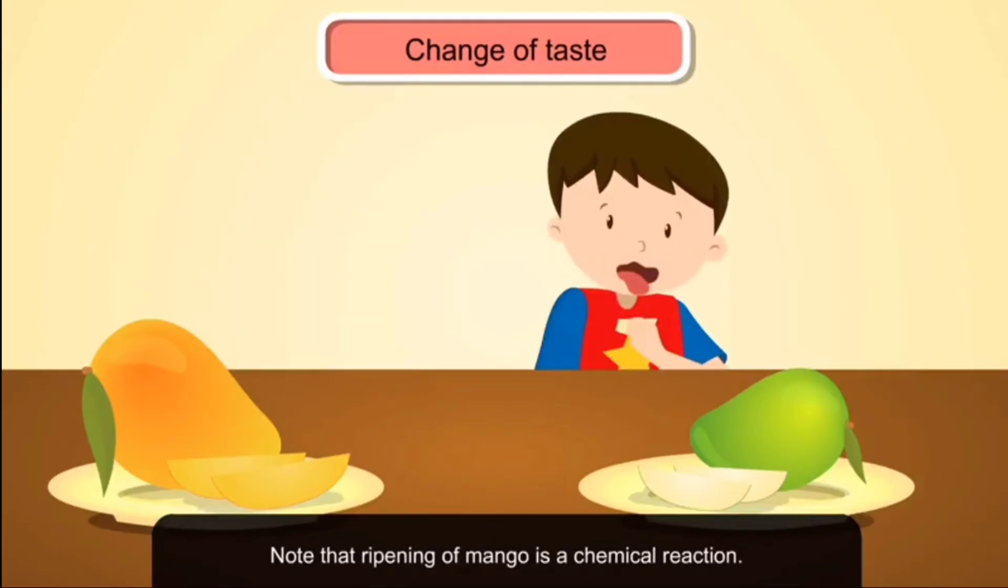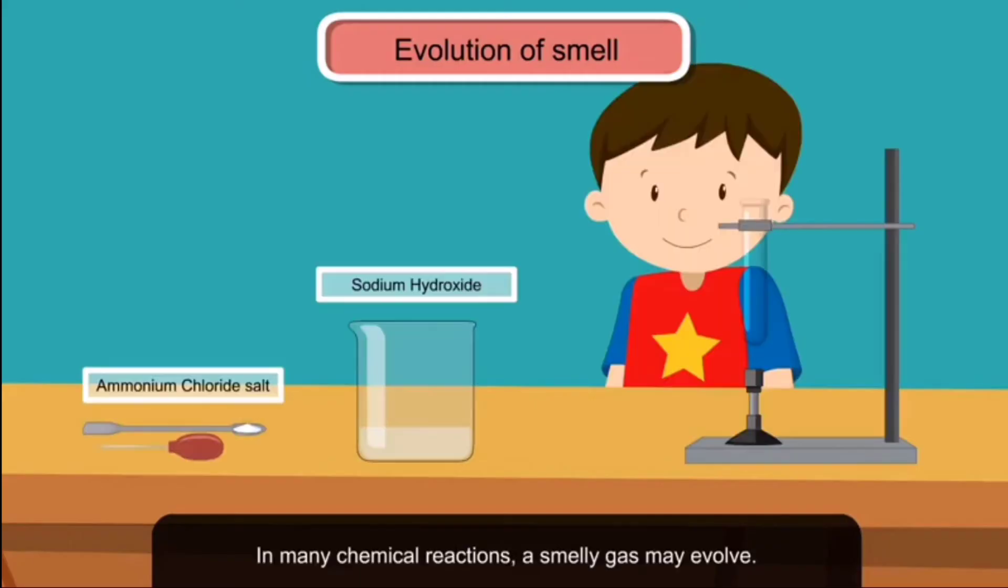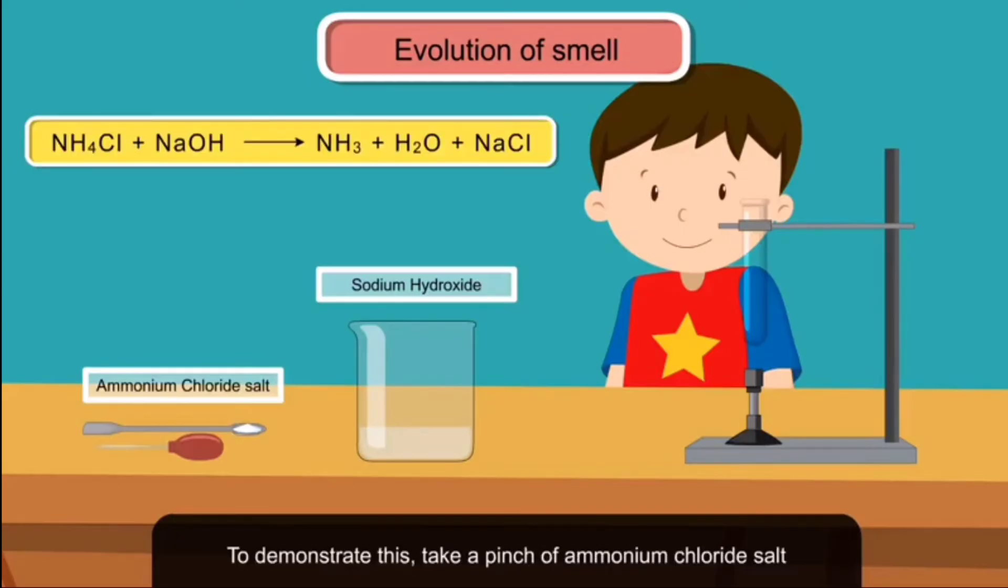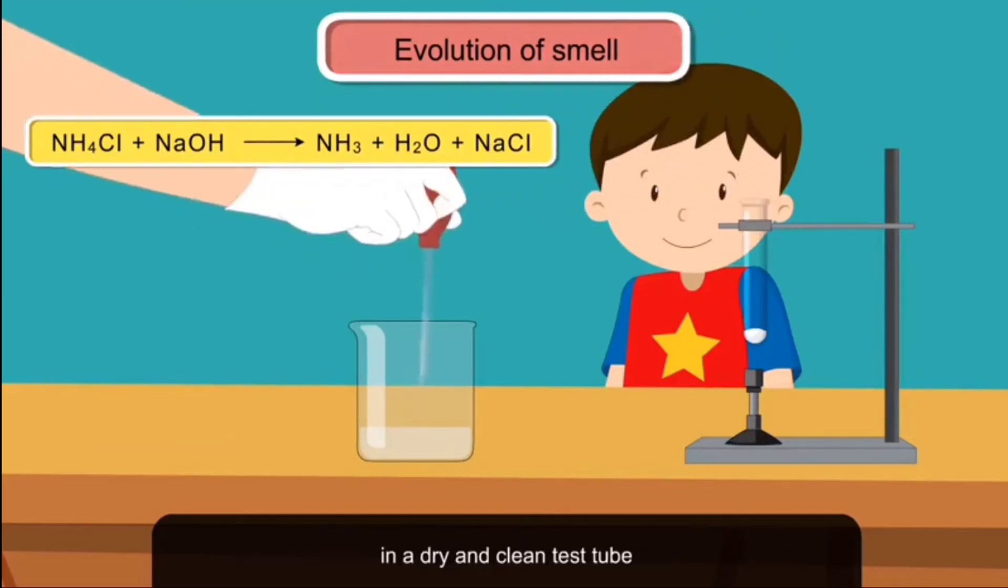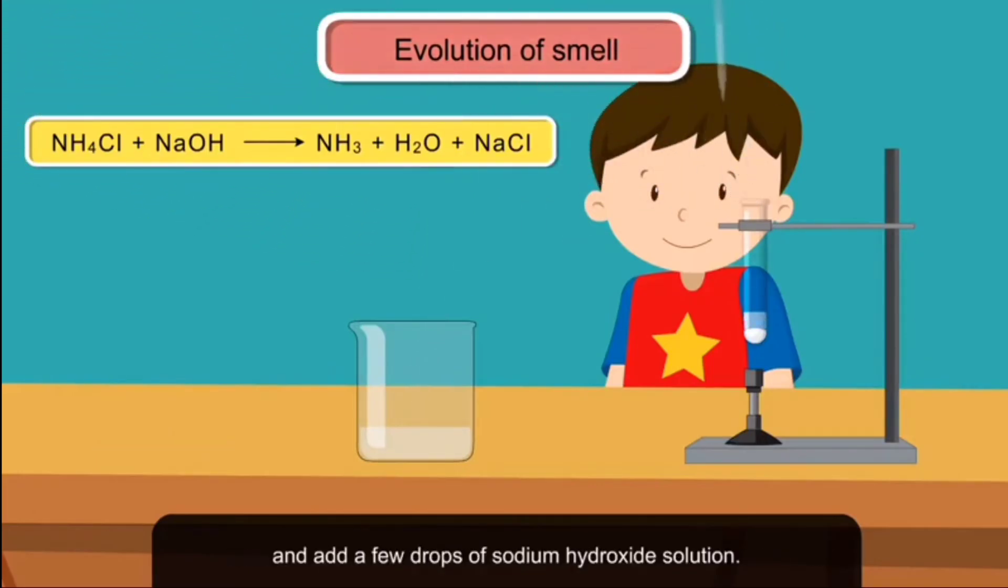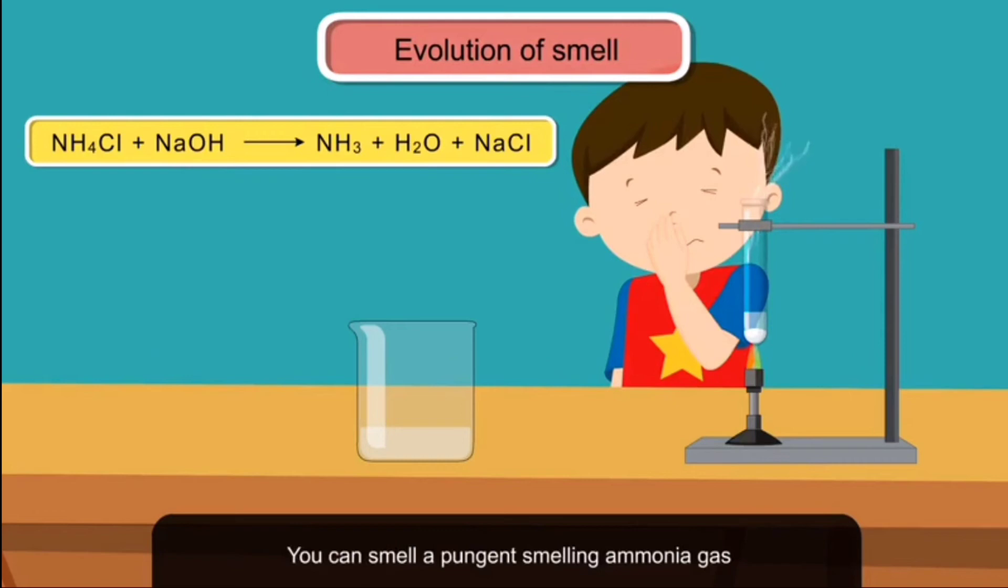Evolution of smell: In many chemical reactions, a smelly gas may evolve. To demonstrate this, take a pinch of ammonium chloride salt in a dry and clean test tube and add a few drops of sodium hydroxide solution. Now heat the test tube. You can smell a pungent smelling ammonia gas coming out from the test tube.